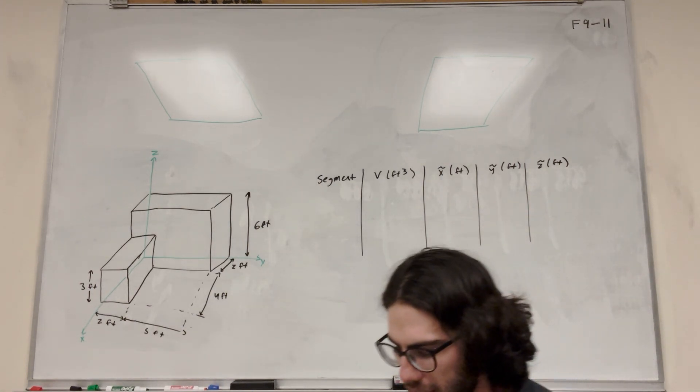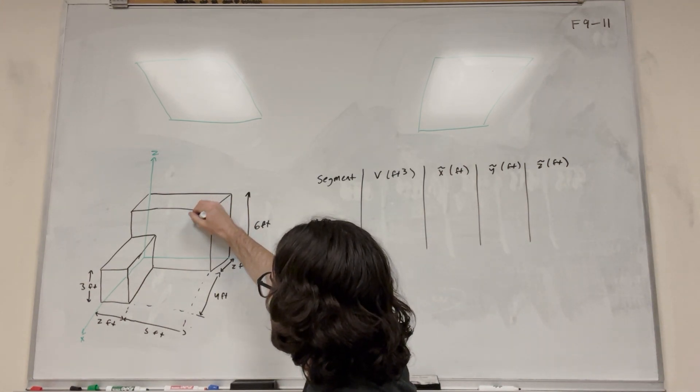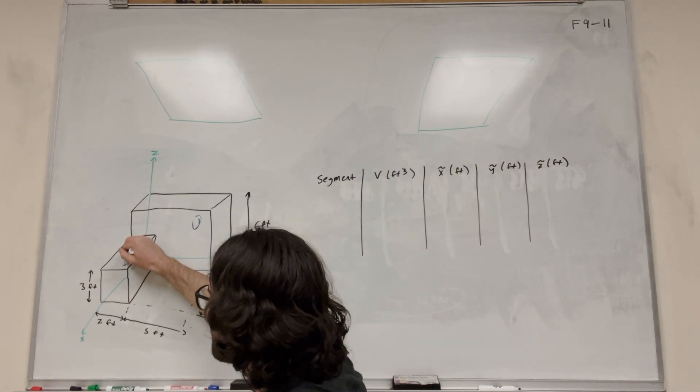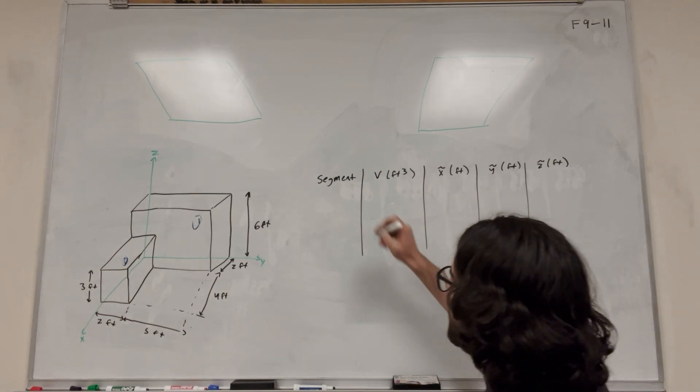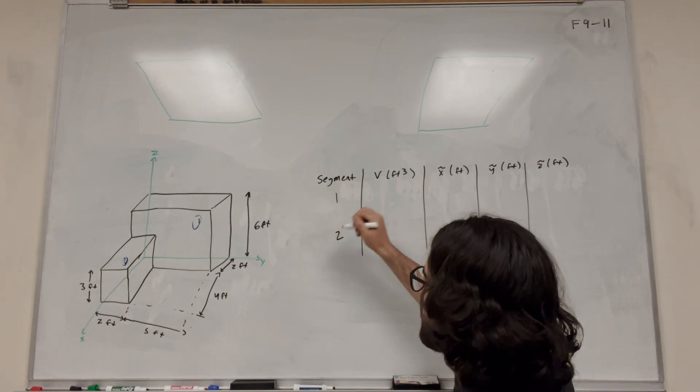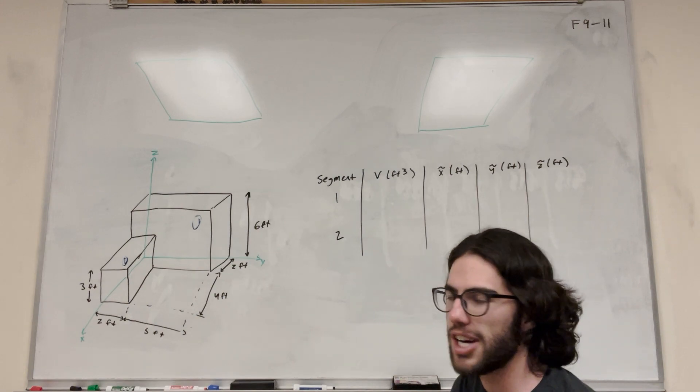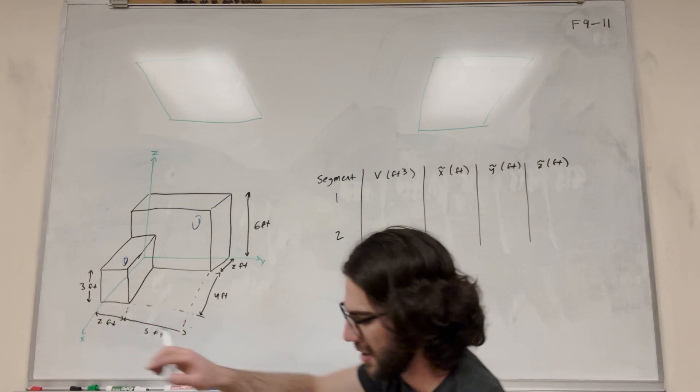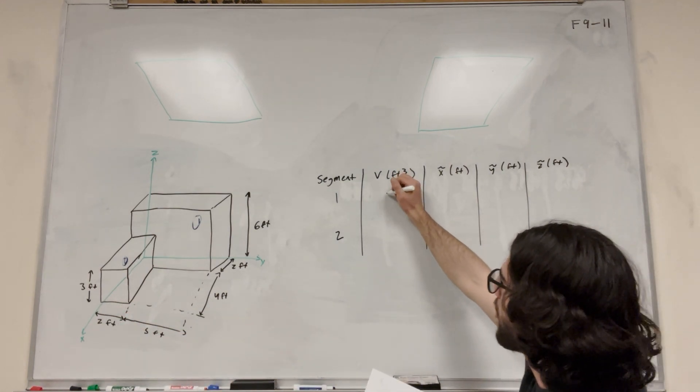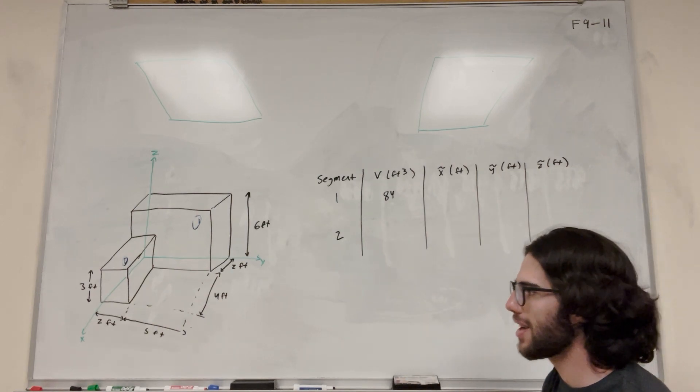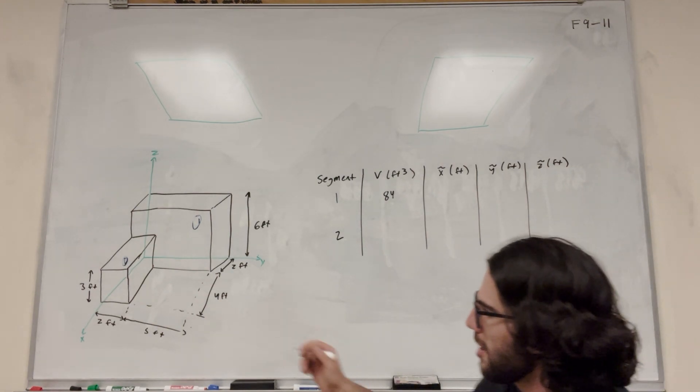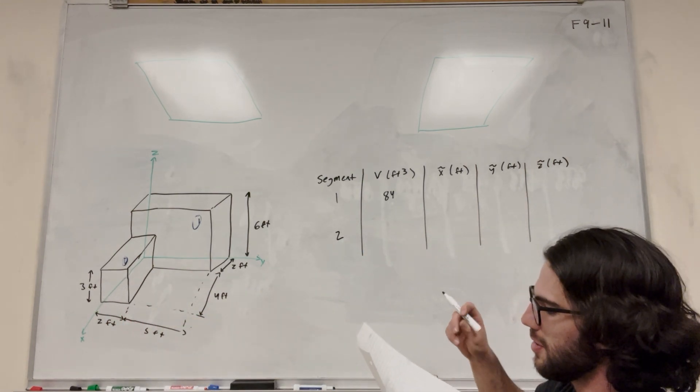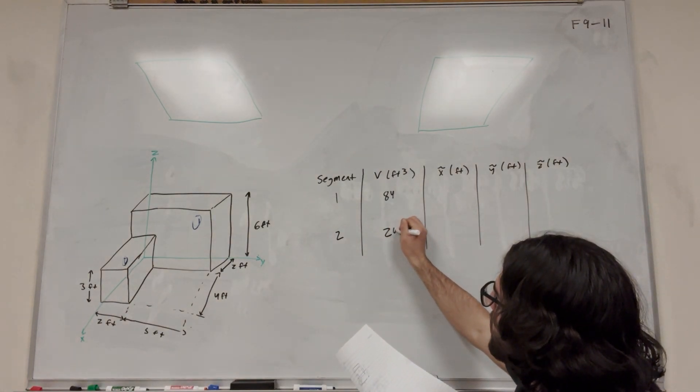So let's do that. We need to go ahead and label these shapes as segments. So this big first rectangle is going to be one, and then this is going to be two. So now we have segment one and segment two. So what's the volume of each one of these? Well, it's pretty easy to find volume of a rectangle. So for this one, it's six feet long, two feet wide, and seven feet. So it's going to be six times two times seven, which is 84. So then our next shape here, it's four feet long, two feet by three feet. So four times two times three is equal to 24.